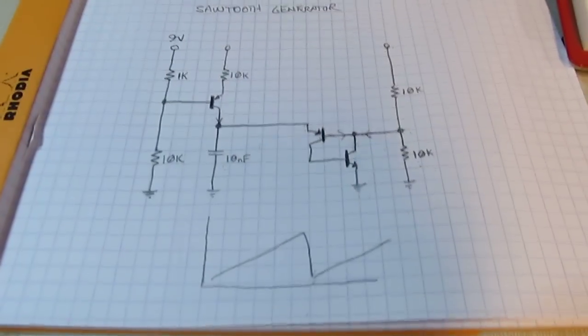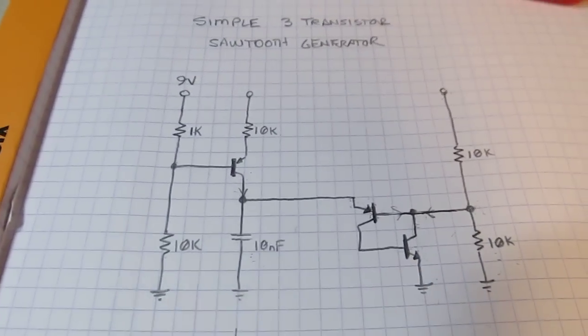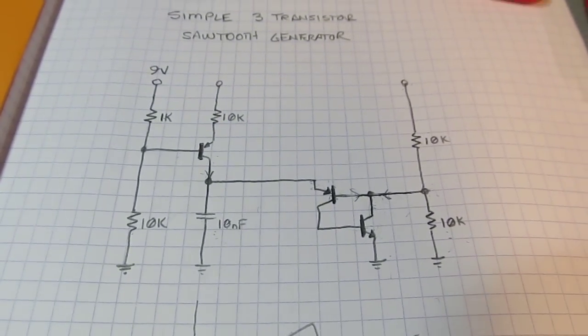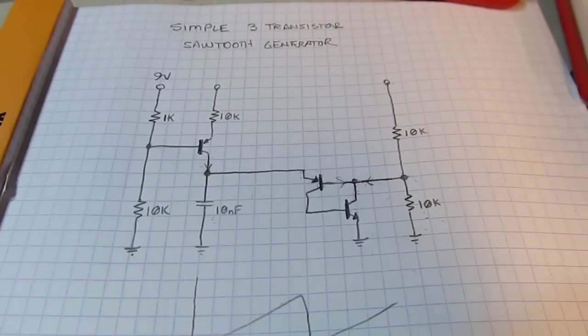So that's how that circuit works. I thought it would be an interesting one to look at. A really simple sawtooth generator you can build with literally just a small handful of parts. Again, thanks for watching. Thanks for all the great comments and we'll see you next time.